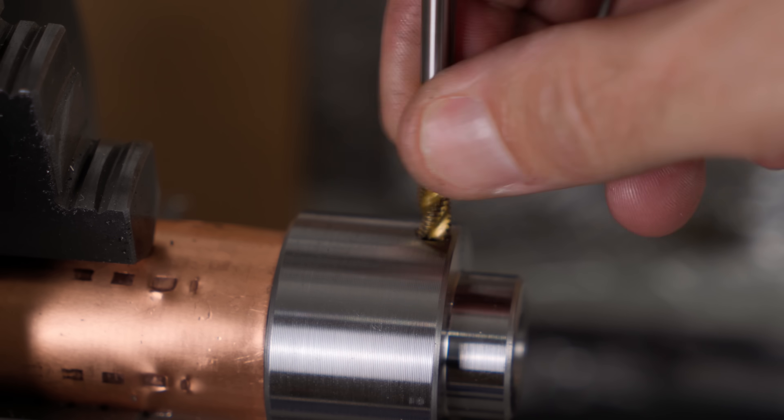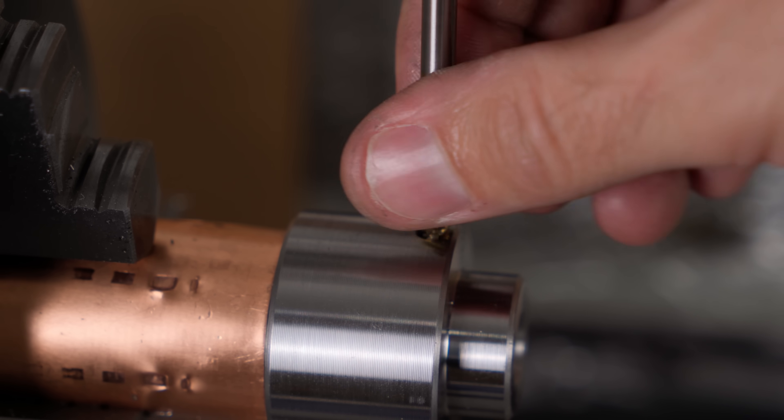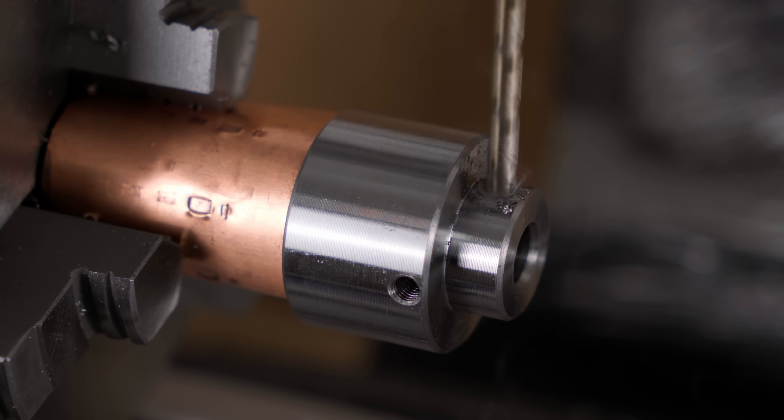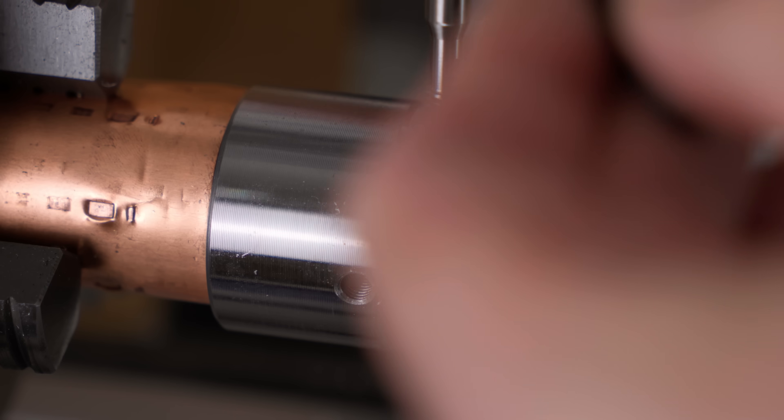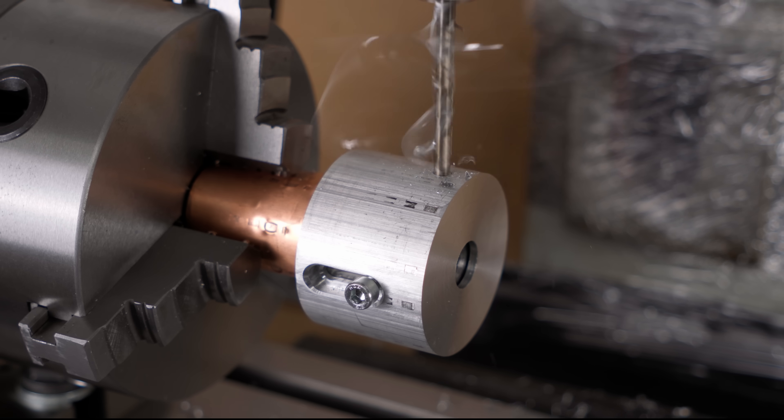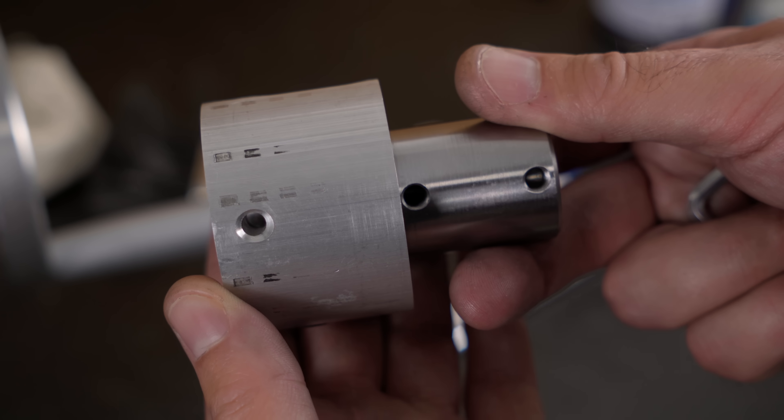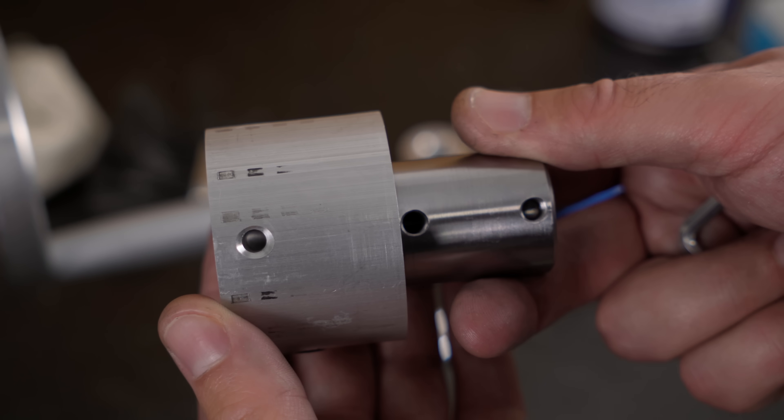So this hole doesn't go all the way through, only the 3M6 for holding the center will. And after this, I can't forget to make another pass with the reamer, just to clean up the hole.